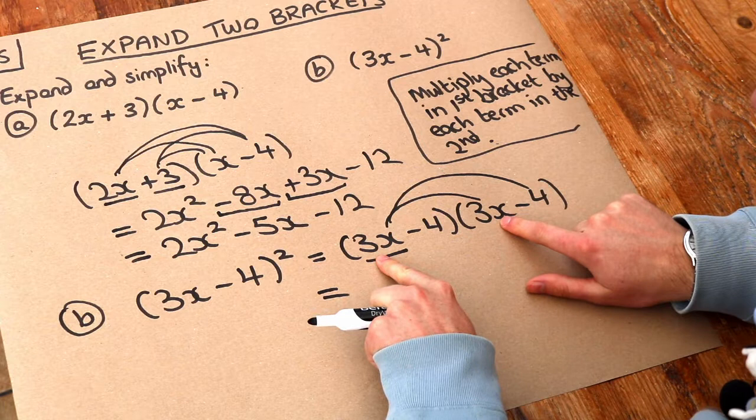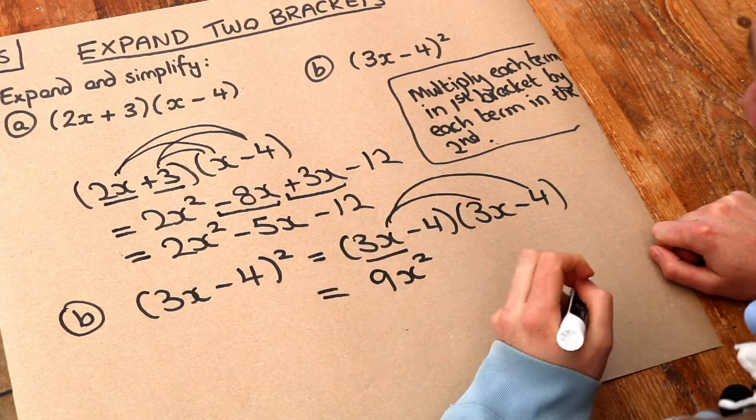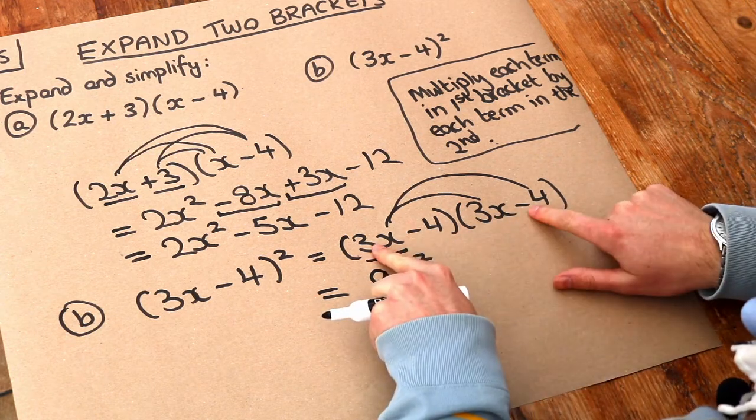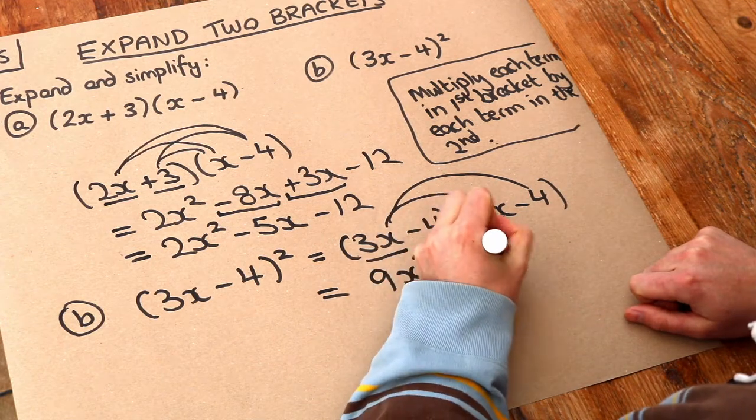3x times 3x is 9x squared. A very common student misconception is to think it's 3x squared because they forget to do the 3 times the 3. Then we've also got the 3x times the minus 4. Positive times negative is negative. So it's minus and it's 12x.